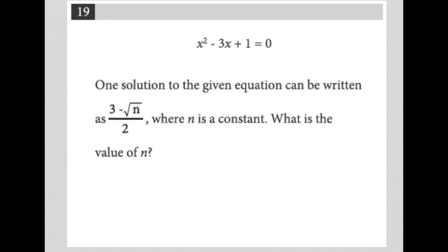This question starts with the equation x² - 3x + 1 = 0. We're told one solution to the given equation can be written as (3 - √n)/2, where n is a constant. What is the value of n?